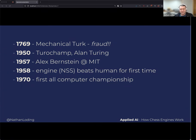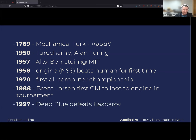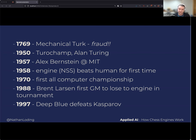In 1970 the first all-computer chess engine championship was held. In 1988, Bent Larsen became the first chess grandmaster to lose to an engine in a tournament — a big milestone. Then in 1997, Deep Blue defeated Kasparov. They first played in 1996 and Kasparov won, then came back in 1997 with the new Deep Blue.